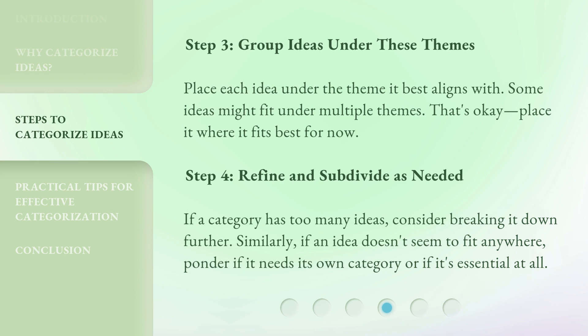Step 3: Group ideas under these themes. Place each idea under the theme it best aligns with. Some ideas might fit under multiple themes — that's okay, place it where it fits best for now. Step 4: Refine and subdivide as needed. If a category has too many ideas, consider breaking it down further. Similarly, if an idea doesn't seem to fit anywhere, ponder if it needs its own category or if it's essential at all.